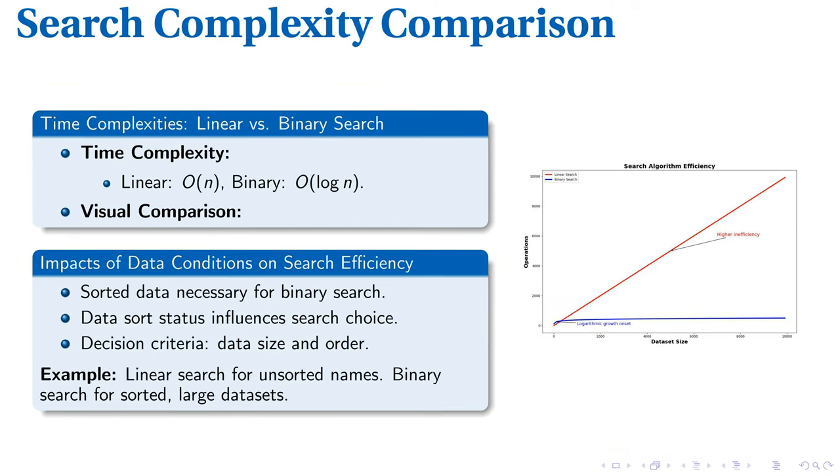Time complexities of linear and binary search paint a clear picture of computational efficiency. Linear search comes with a time complexity of O(n), denoting a linear increase in time as the number of elements increases. Binary search, however, offers a time complexity of O(log n), meaning it halves the dataset with each step. This logarithmic reduction ensures a quicker search, especially with larger, sorted datasets.